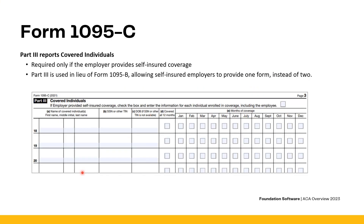Another part of the Form 1095-C is Part 3, which reports covered individuals. Part 3 is required only if the employer provides self-insured coverage — meaning you self-insure and self-administer healthcare coverage rather than working through a carrier like United Healthcare, Medical Mutual, or Cigna. Self-insured ALEs can use the 1095-C to both report the offer of coverage and the covered individuals, instead of issuing separate 1095-B and 1095-C forms.